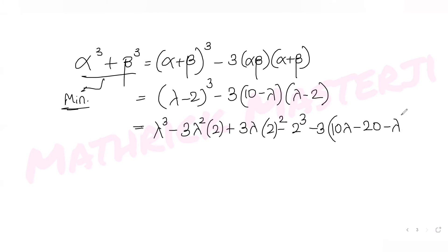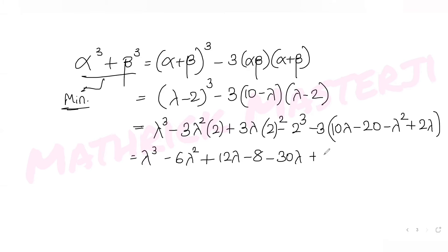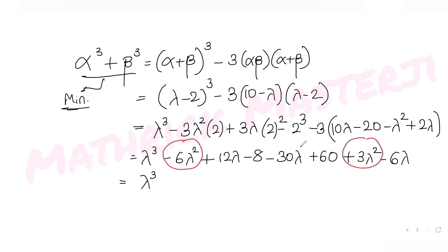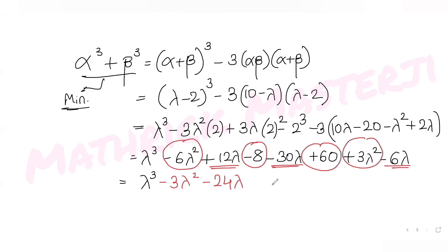Collecting terms: λ³ - 6λ² + 12λ - 8 - 30λ + 60 + 3λ² - 6λ, which simplifies to λ³ - 3λ² - 24λ + 52. So the sum of cubes of the roots is expressed as a function of λ, and we need to minimize this function.